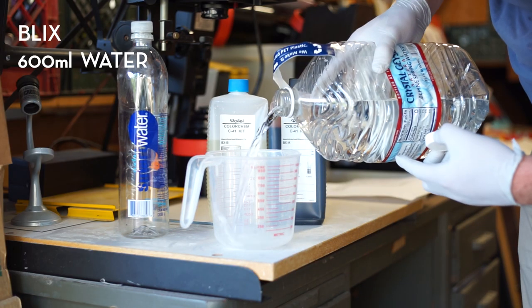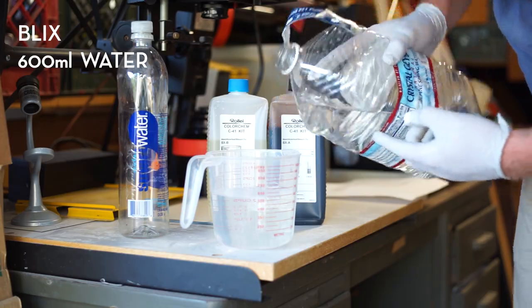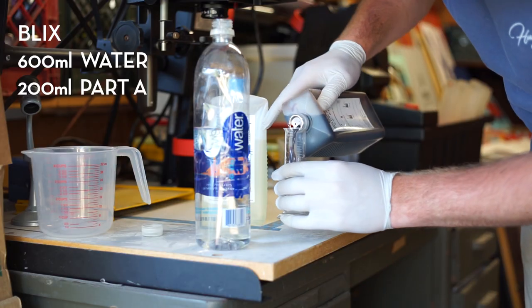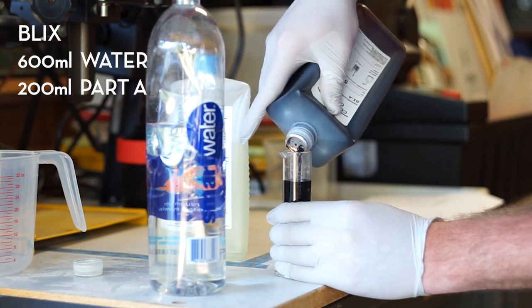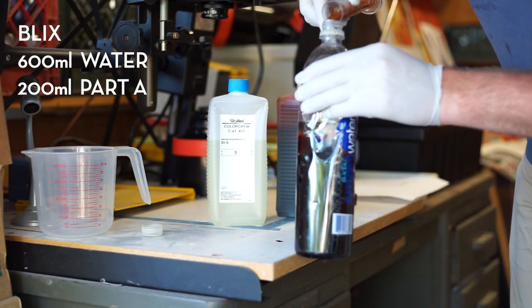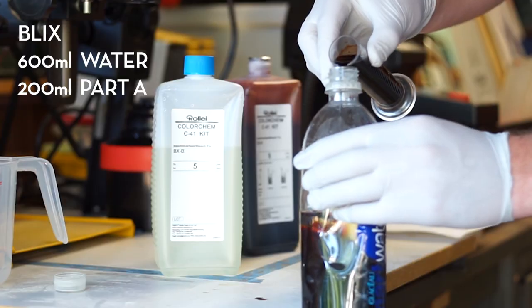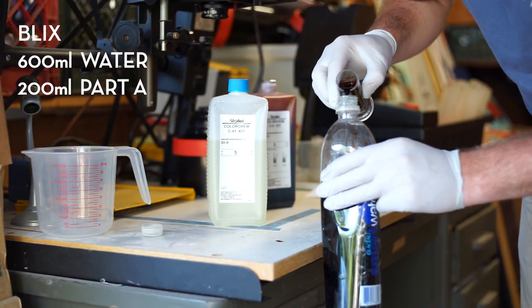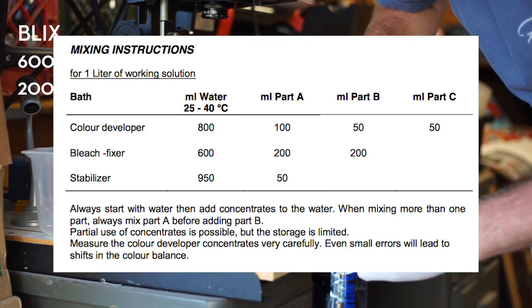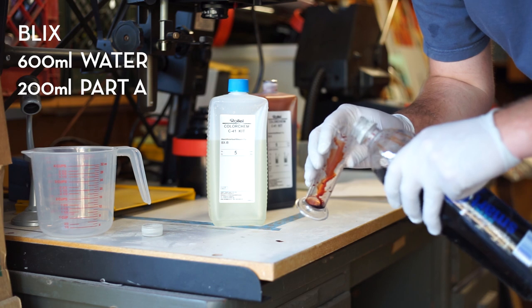Then you're gonna mix up your blix, which is basically the color version of fixer. So after you've developed your film, then you put it in blix which fixes it so that it's light safe. You basically just mix the chemicals and read the directions on the box, and it's pretty simple honestly. You just kind of go by the numbers and boom, you're ready to go.